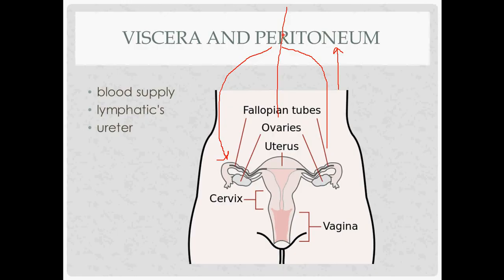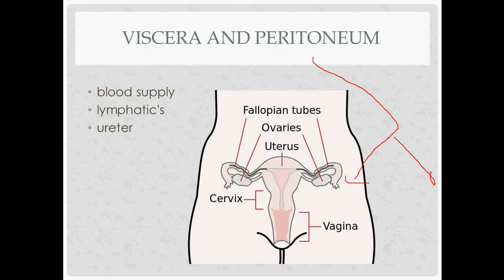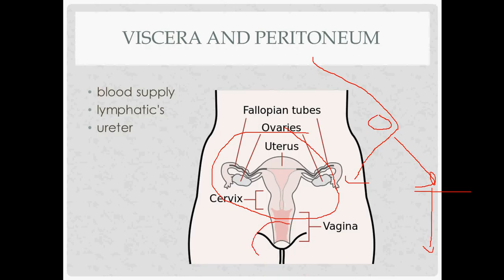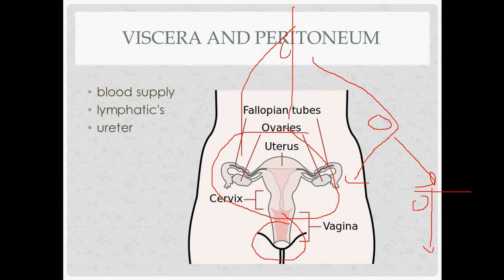Lymphatics and embryology go together. The uterus and upper vagina are Müllerian structures, and they drain to the common iliac nodes. The more distal vagina is part of the urogenital sinus — not a Müllerian structure — and that drains to the inguinal lymph nodes, which are near the inguinal ligament and femoral artery. The ovaries descended from the abdominal aorta level, get their blood supply from there, and drain to the para-aortic nodes.